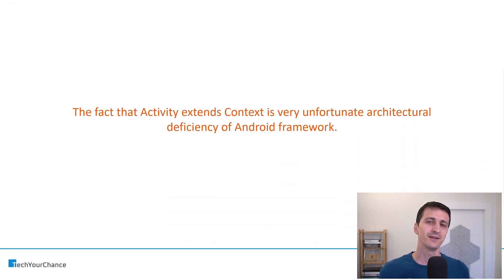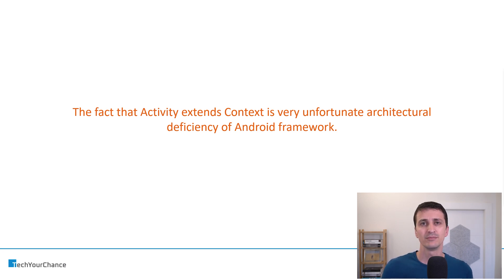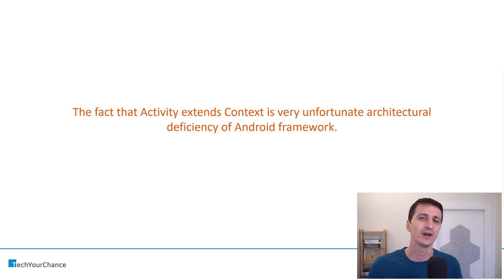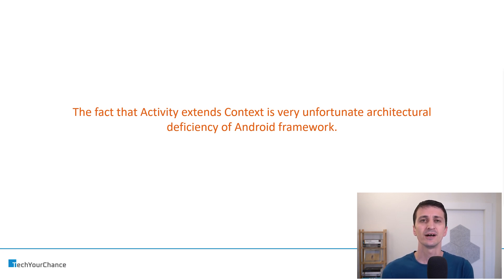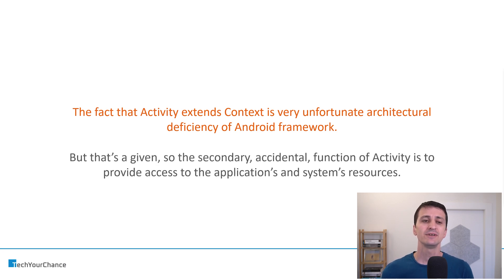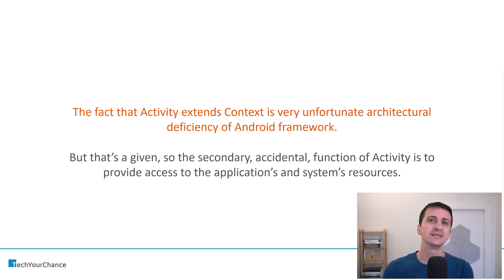We should not forget the fact that activity is also a Context — activity extends from Context. That's a very unfortunate architectural deficiency of the Android framework. Android's authors made a huge mistake many years back, and there's no way to fix it now because it's at the core of Android architecture — it would require refactoring the entire framework. Basically, they derived activity from Context, which is a god class that opens up access to system and application resources and functionality. Therefore, activity is also used as a gateway to system and application resources and functionality — but that's not its main responsibility.